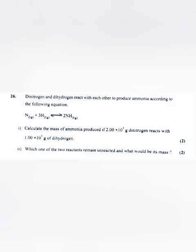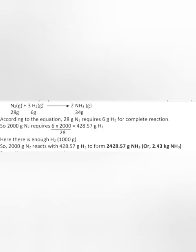Question 26: Dinitrogen and dihydrogen react with each other to produce ammonia according to the following equation. Calculate the mass of ammonia produced if 2.00 times 10 to the 3 grams dinitrogen reacts with 1.00 times 10 to the 3 grams of dihydrogen. Answer: 28 grams of N2 react with 6 grams of 3H2 to form 34 grams of 2NH3.